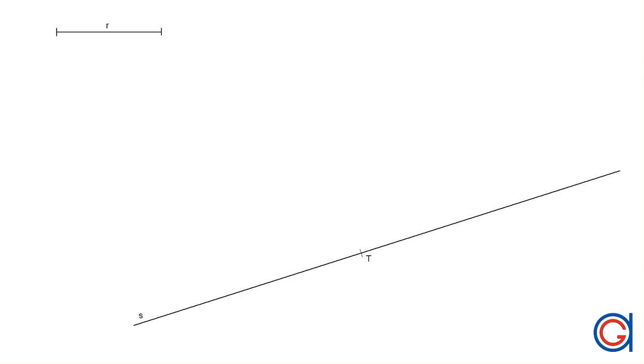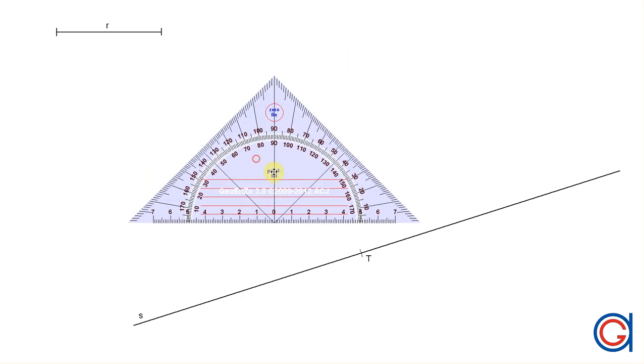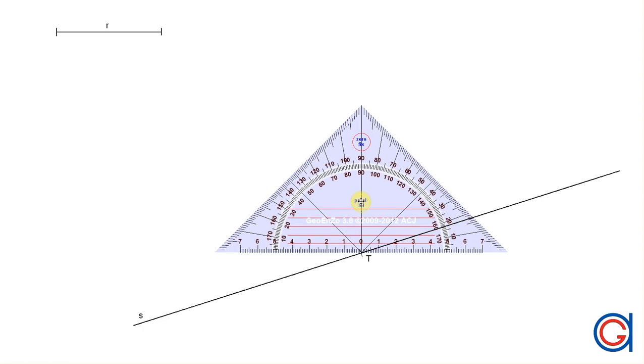So here you can see on the screen we have a given line s with a tangent point t and the given radius at the top left side of the screen.